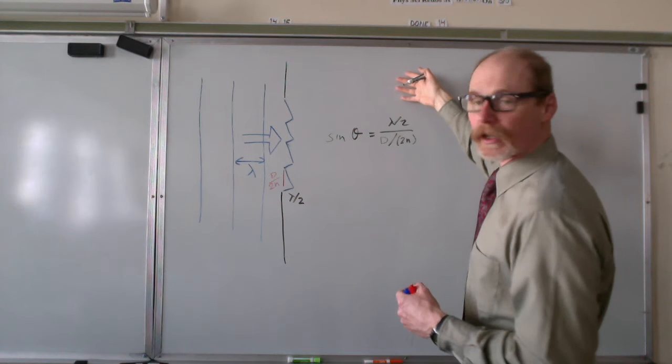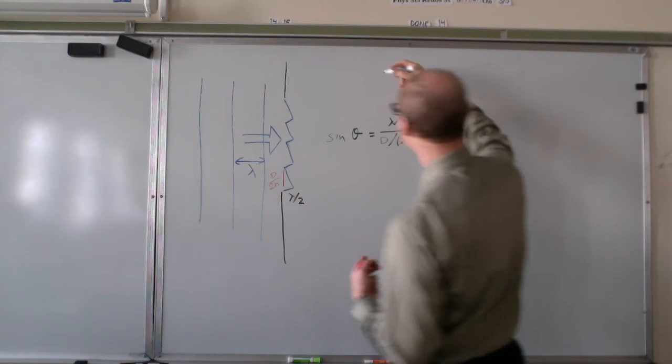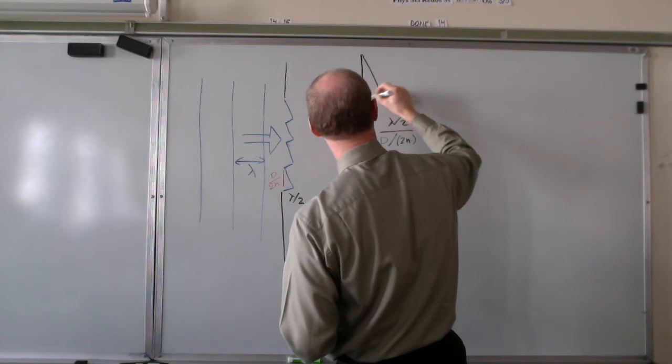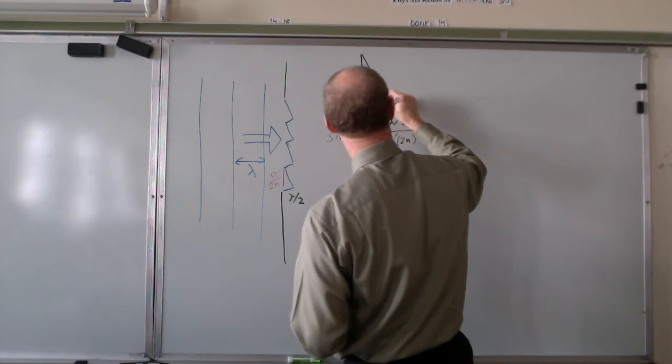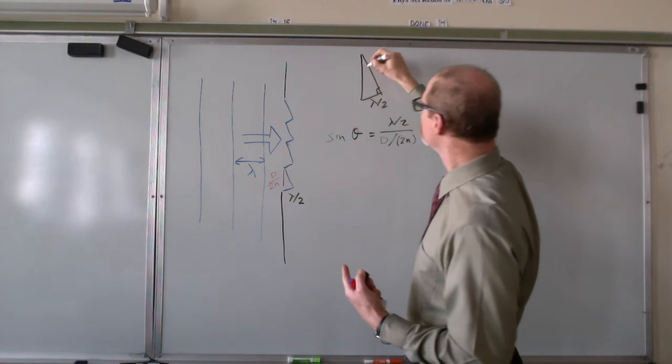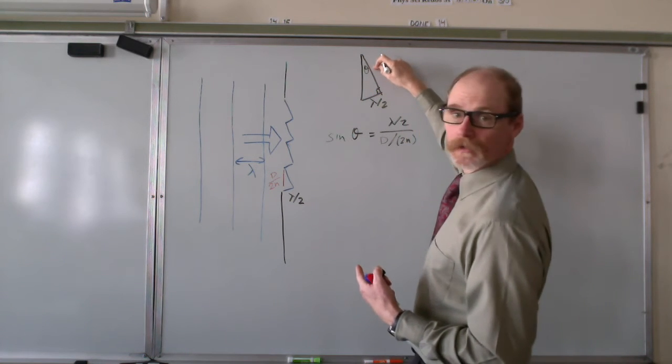And again, I should draw the triangle to show exactly what I mean. So the opposite side, the opposite side is lambda over 2. That angle is theta.